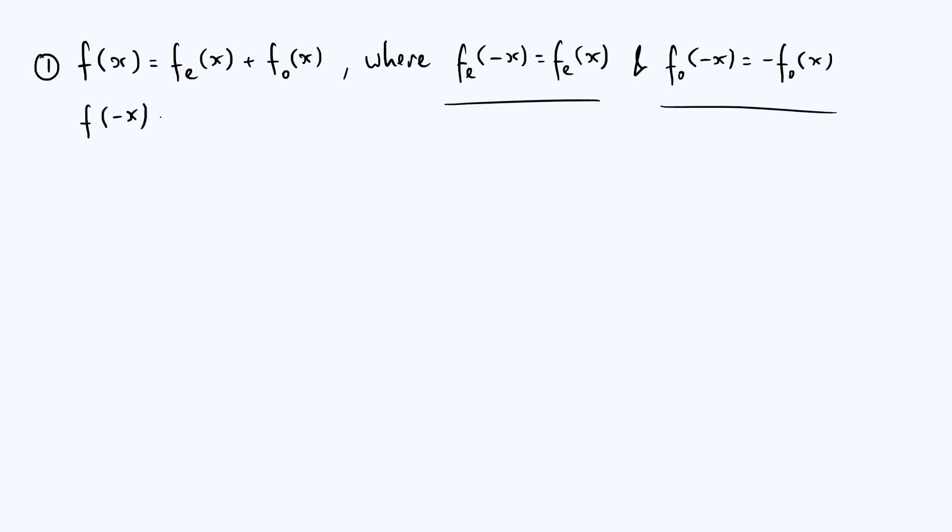And we very straightforwardly get that f of minus x is fe of minus x plus fo of minus x. So all I've done is relabel x to minus x there. But now we can use the desired symmetry properties and say that, well, therefore f of minus x should be equal to fe of x, because from that first underlined property at the top, fe of minus x is the same as fe of x.